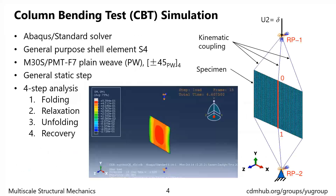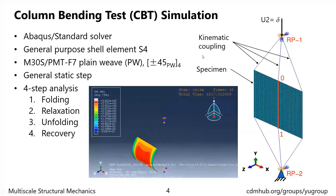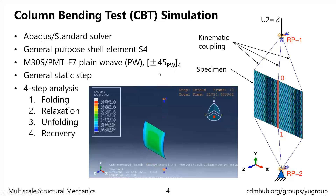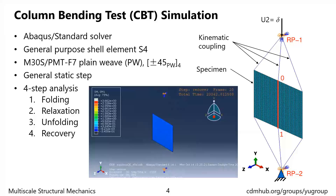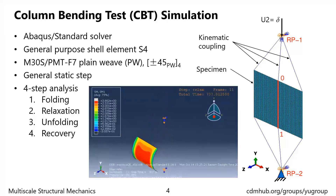First is the CBT simulation. In this simulation, we use four-noded shell elements to represent the specimen, kinematic coupling for the loading arms, and the reference point for the loading head. The specimen has four parts of plus-minus 45-degree plain weave composite. A general static step is used on all four simulation steps, which are the folding, relaxation, unfolding, and recovery.